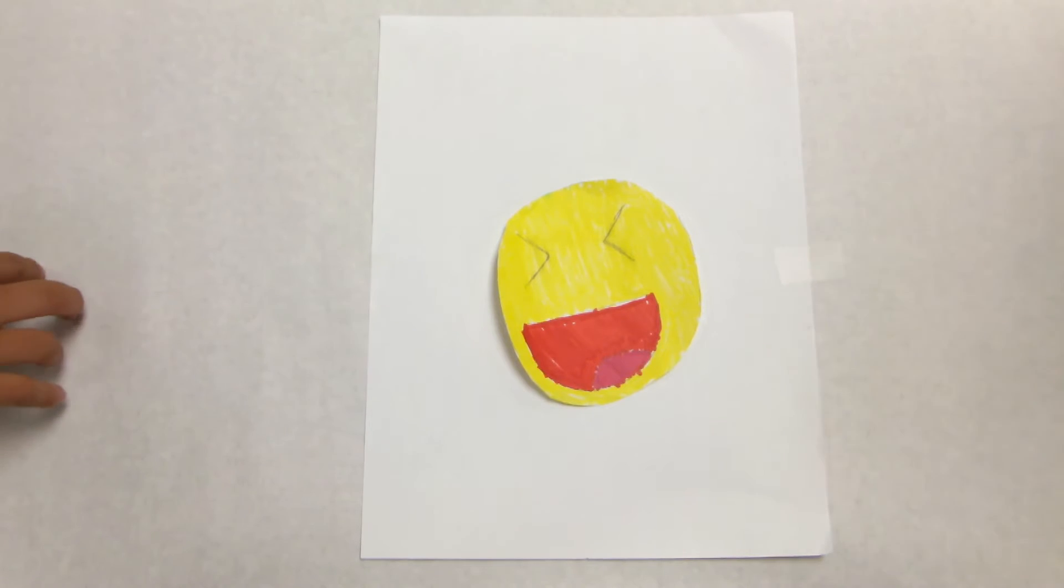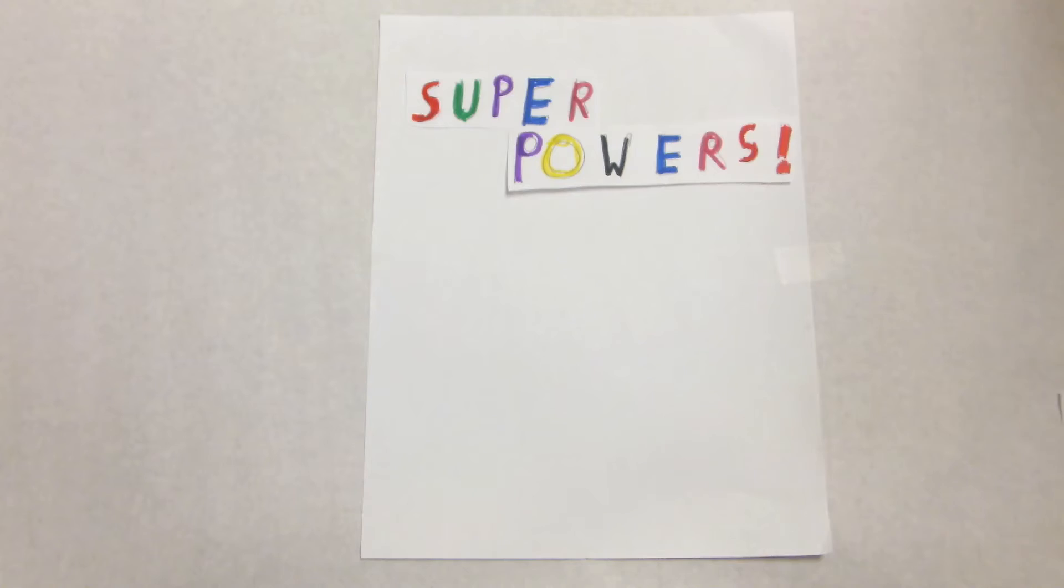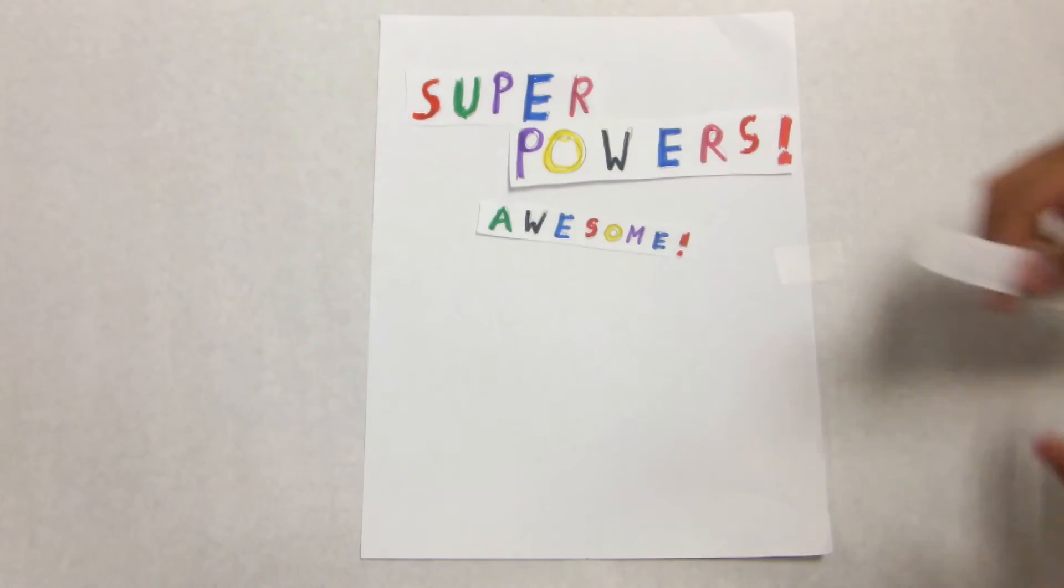Hilo looks like a normal boy and he usually acts like a normal boy, but the cool thing about him is that he has superpowers that are awesome, but sometimes destructive.